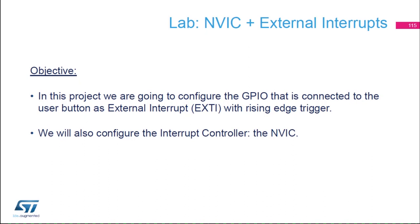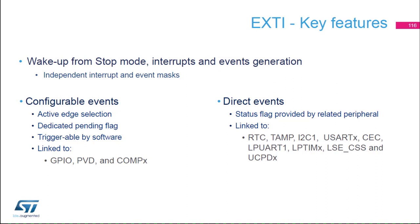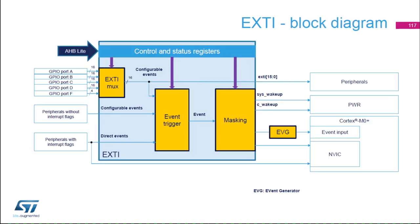In this project we will learn how to configure the GPIO connected to the user button as EXTI, so external interrupt with rising edge. The key features of EXTI include the ability to wake up the STM32 from stop mode. It also generates interrupts and configurable events, where you can configure the active edge to be falling or rising edge, and there are also direct events.